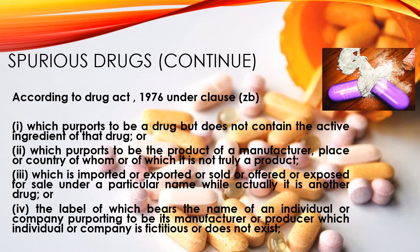In conclusion, the incidence of spurious and counterfeit drugs can be reduced by using GS1 data matrix 2D barcodes. The practice of making spurious and counterfeit drugs is a crime. According to Clause A of Section 27 of the Drugs Act 1976, to export, import, manufacture for sale, or sell any spurious drug or any drug which is not registered shall be punishable with imprisonment for a term of not less than 3 years or more than 10 years.